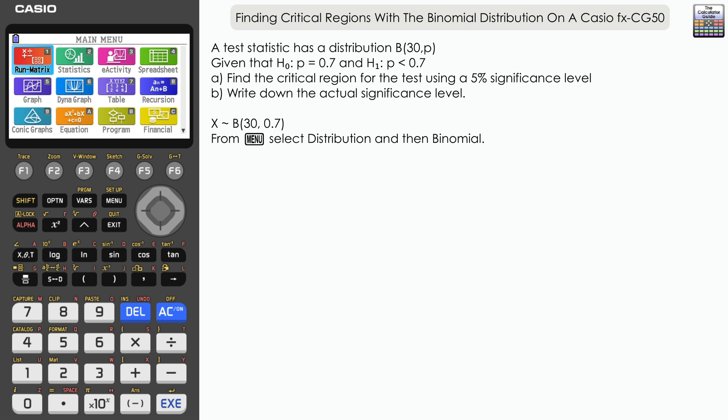So we've got the model for the distribution here: X is distributed binomially, we've got an n of 30, and then we assume the probability from H₀ is correct, so we'll use a probability of 0.7.